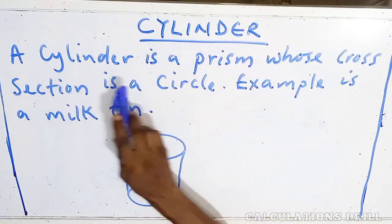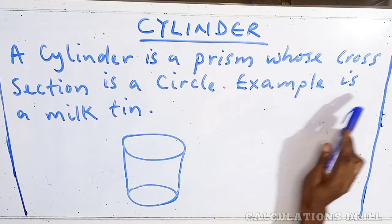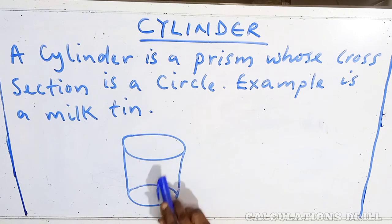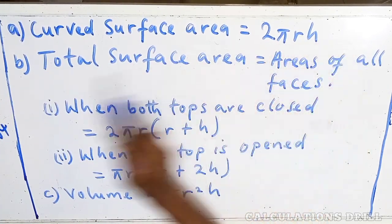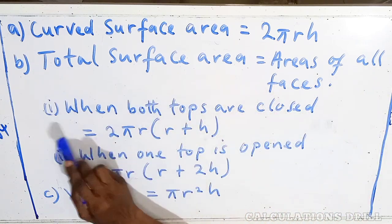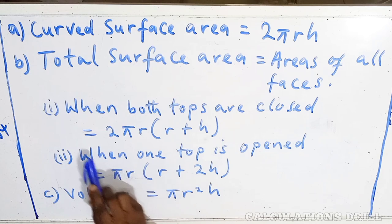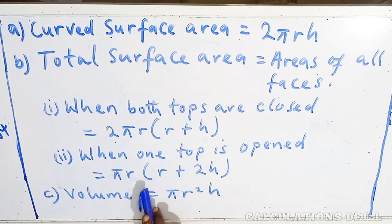Cylinder. A cylinder is a prism whose cross-section is a circle. Example is a milk tin. As you can see in the diagram below. Curved surface area is equal to 2πrh. Total surface area is equal to area of all faces. When both tops are closed, the formula is 2πr(r + h). When one top is open, the formula is πr(r + 2h). While volume is πr²h.